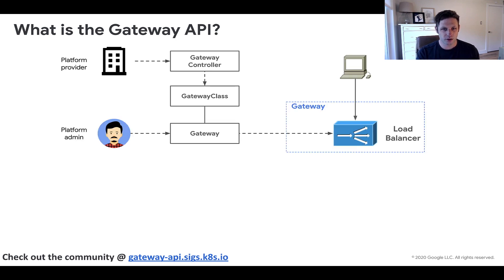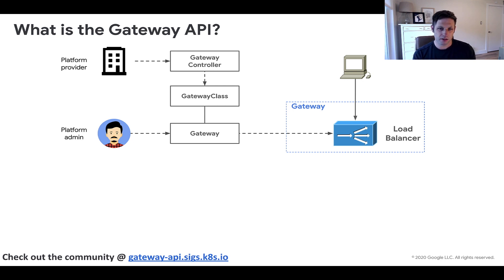Gateways are created from Gateway classes, and they model the actual network infrastructure which processes the traffic — your actual load balancer. They may model a load balancer, but gateways are designed to be abstract, and so they can model many different kinds of data planes that perform routing.